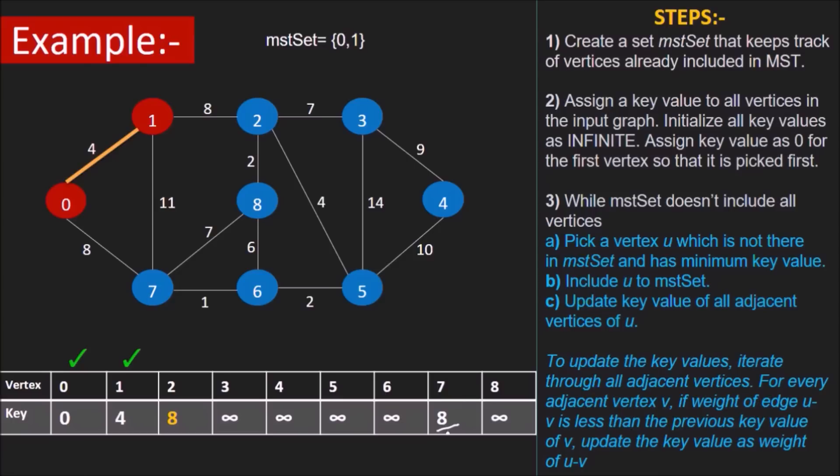Again, pick vertex with minimum key not in MST set. Both v2 and v7 have lowest keys so you can add either to MST set. Let's add v7. V8 and v6 are adjacent vertices of v7 not in MST set. We'll update their keys following the same procedure as earlier.